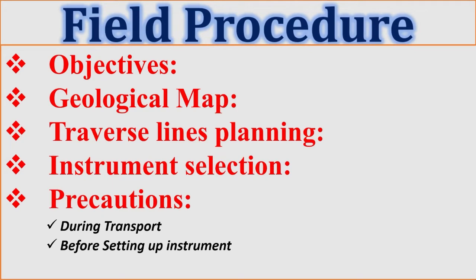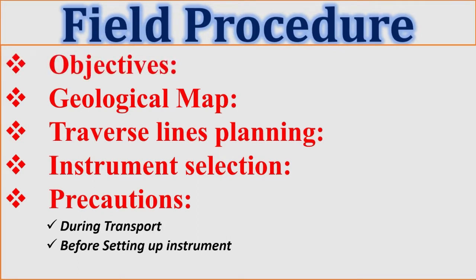First, the objectives of the survey. The magnetometer survey depends upon its objectives — whether it is connected with the location of mineral deposits, or related to structures or mining purposes. On the basis of that, we have to change our surveying procedure. Once objectives are fixed, we go to the geological map of that particular area, which makes surveying easier.